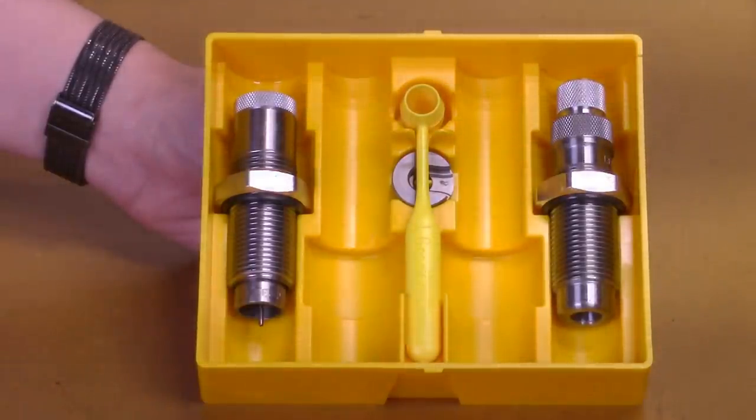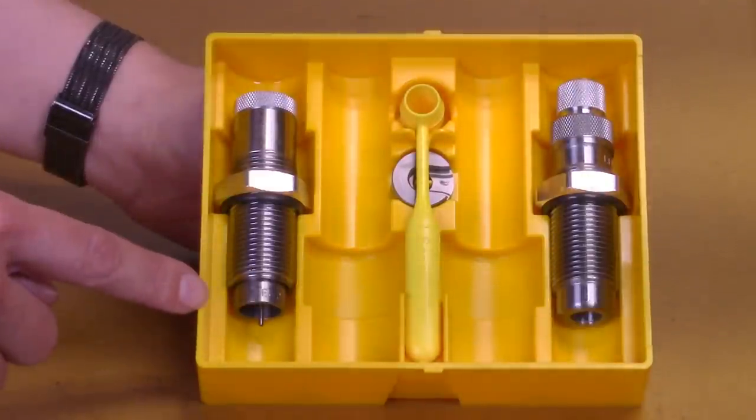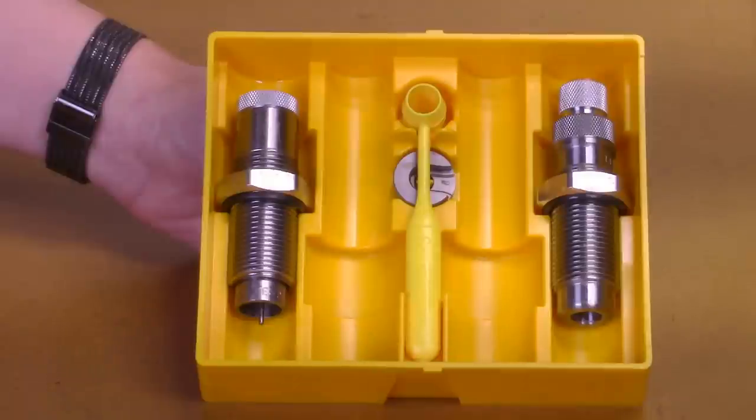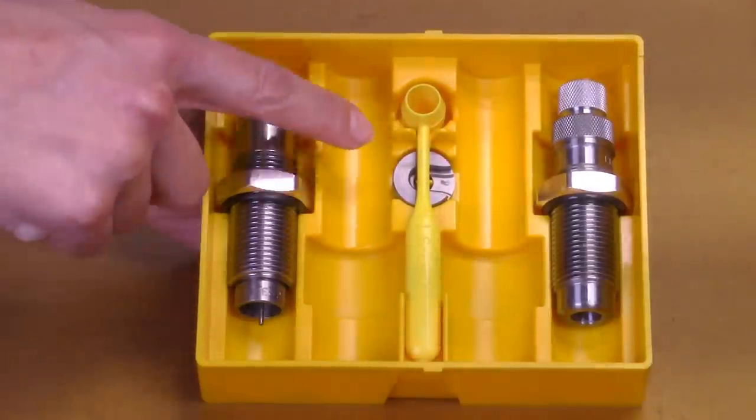This set includes the Collet Neck Sizing Die, the Easy Adjust Dead Length Bullet Seating Die, as well as a free shell holder, comprehensive load data, and a powder dipper.